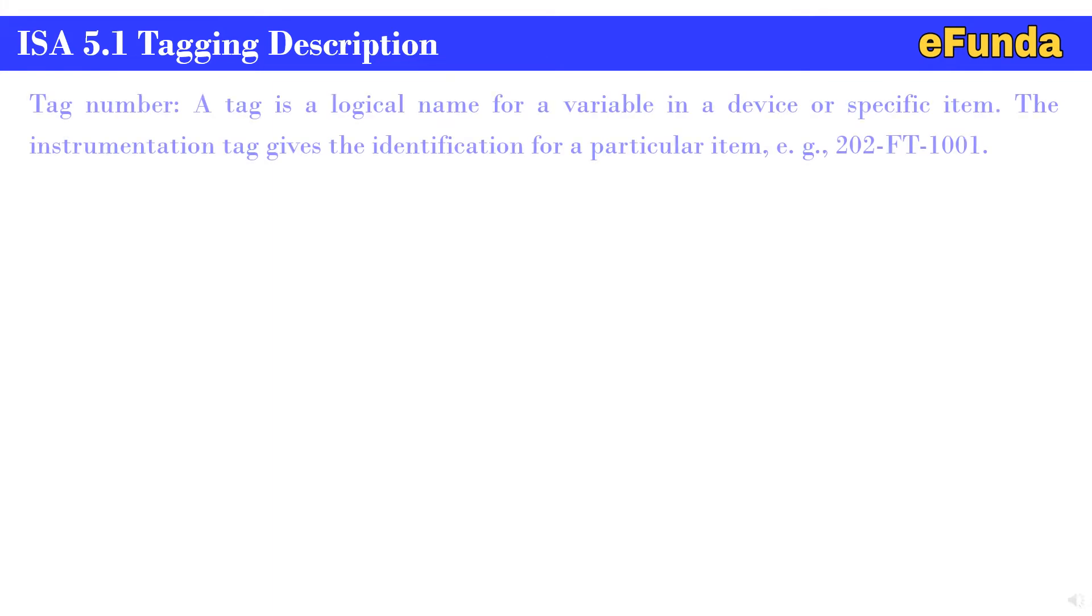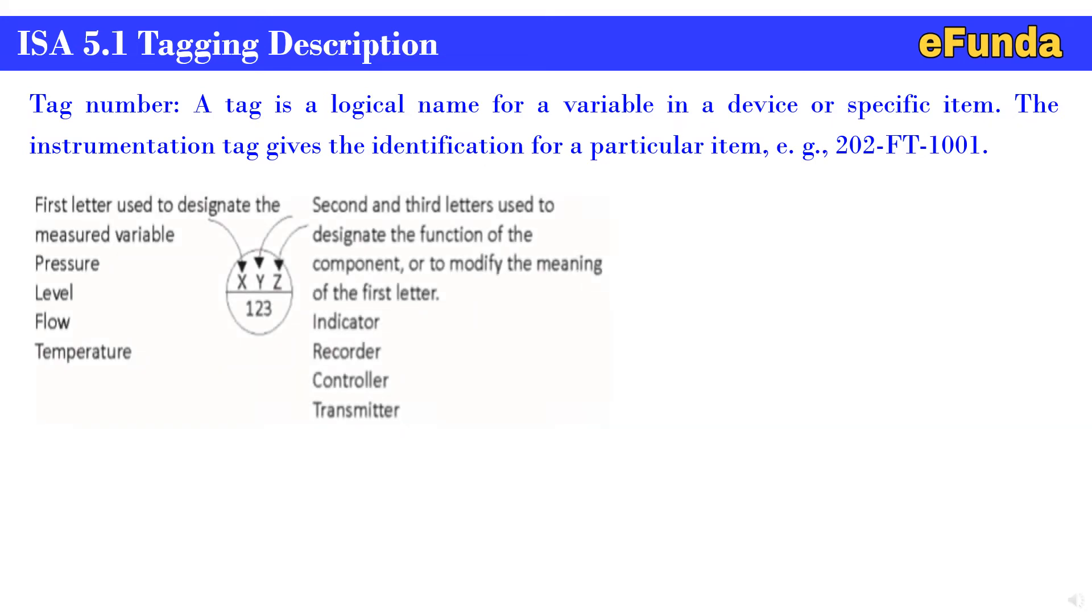Moving on to ISA 5.1 Tagging Description. The tag number is a logical name for a variable in a device or a specific item. The instrumentation tag gives the identification for a particular item, for example 202-FT-1001. This is the unit number and type of instrument and the sequence number. Now we will understand the analogy for the tagging description as per ISA 5.1. One can see X, Y, Z, 1, 2, 3 indicated in a symbol. Now we will understand the meaning of this.